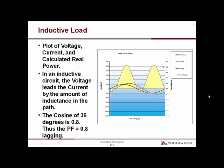This plot of voltage, current, and calculated real power is an AC generator with a purely inductive load. Due to the inductive reactance nature of a coil, the current is delayed behind the voltage. In this case, the shift is 36 electrical degrees. The cosine of 36 degrees equals a 0.8 lagging power factor.